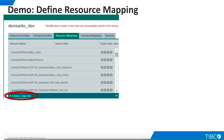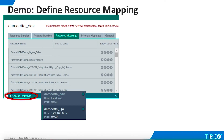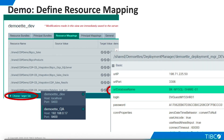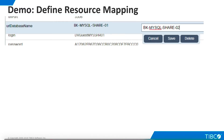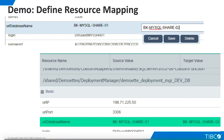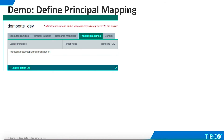Now it's time to do mapping in order to specify any changes that need to occur for our project as it is migrated. We go to the Resource Mapping tab and click Choose Target Site. We select the QA instance, click the down arrow, and we are able to browse the list of all mappable properties. In order to migrate successfully to QA, we need to point to a QA MySQL instance instead of the Development MySQL instance. We double-click this property, enter the new value, and save. The source and target values for the database name now appear on the resource map. Our resource mapping is complete.